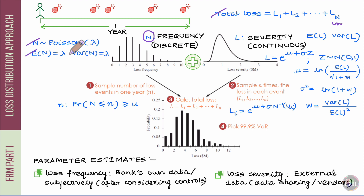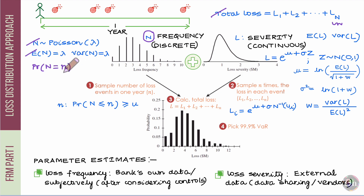Once I have specified the value of lambda, I can use the probability mass function of the Poisson distribution to evaluate the probability of capital N taking on any realized value lowercase n, equal to e to the power minus lambda, times lambda to the power n, divided by n factorial.